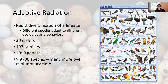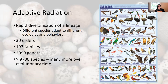Adaptive radiation means the rapid diversification of a lineage, and we see examples of it across birds. It's when different species adapt to different ecologies, environments, and behaviors. Darwin's finches are a classic example — their beaks are adapted to eating different foods. Over time, based on the environment, certain traits allowed individuals to survive and reproduce better, and so those traits persisted. In birds, this adaptive radiation happened rapidly, allowing birds to fill different niches in their environment.